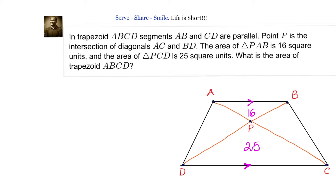If we observe here, we can see some similar triangles. Our approach to solve this problem: we can see that triangle APB is similar to triangle CPD. If these two triangles are similar to each other, their areas will be in the ratio of squares of their corresponding sides and altitudes.